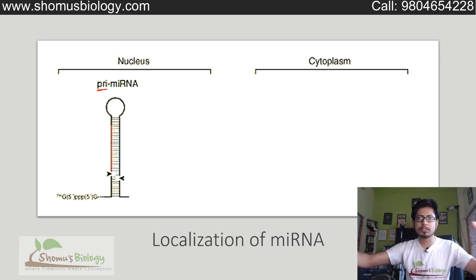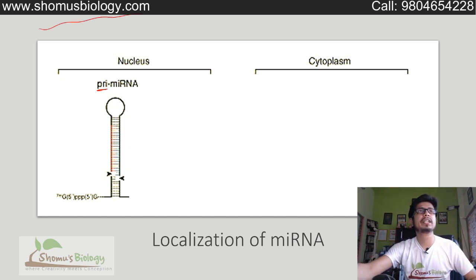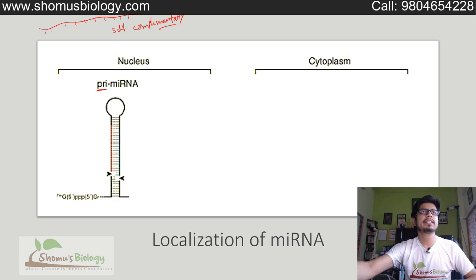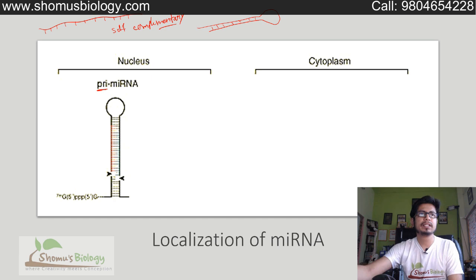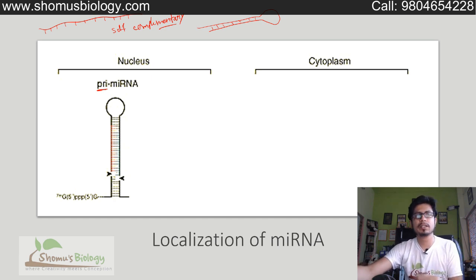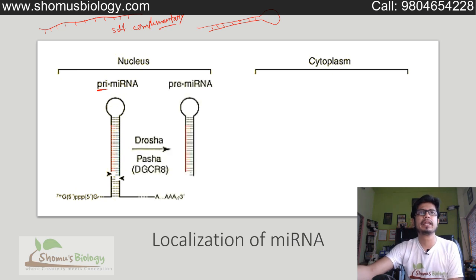It is endogenous in origin. Normally a long stretch of single-stranded RNA is produced, and if that long stretch of single-stranded RNA has lots of self-complementary regions, they can easily bind with themselves and form a hairpin structure — a loop-like structure. If they form this kind of structure, then this pri-miRNA is converted to pre-miRNA by the enzyme Drosha.